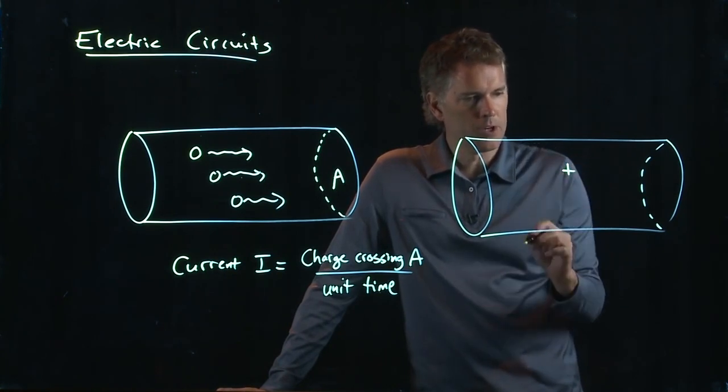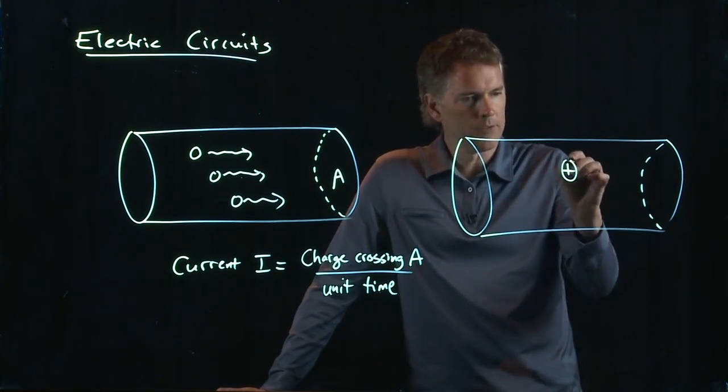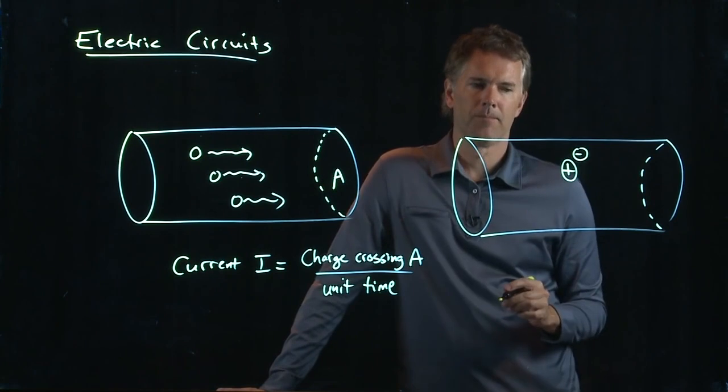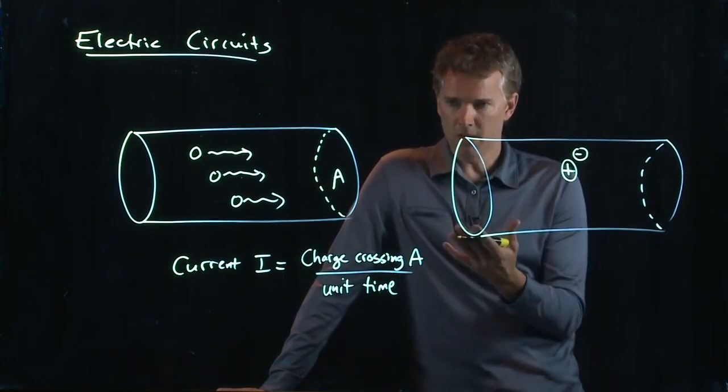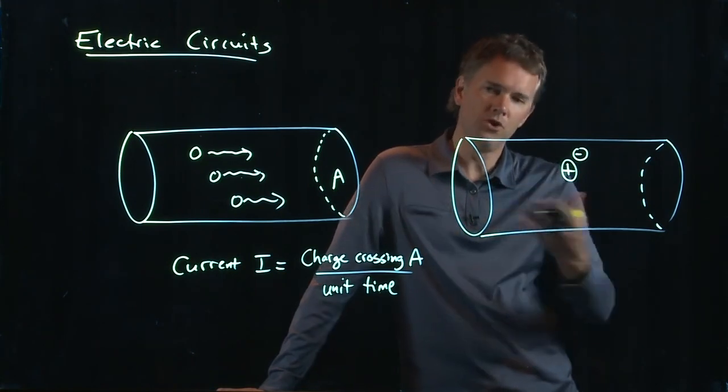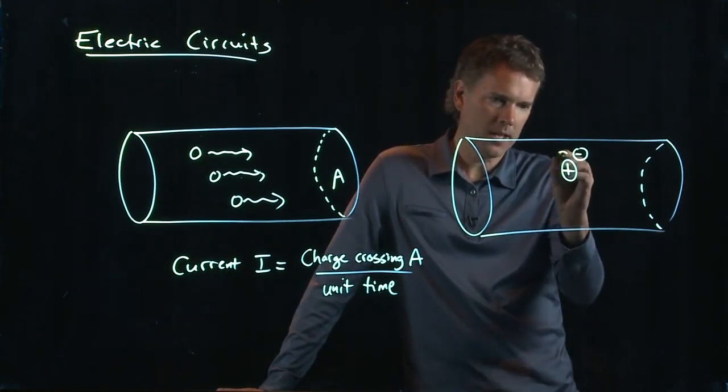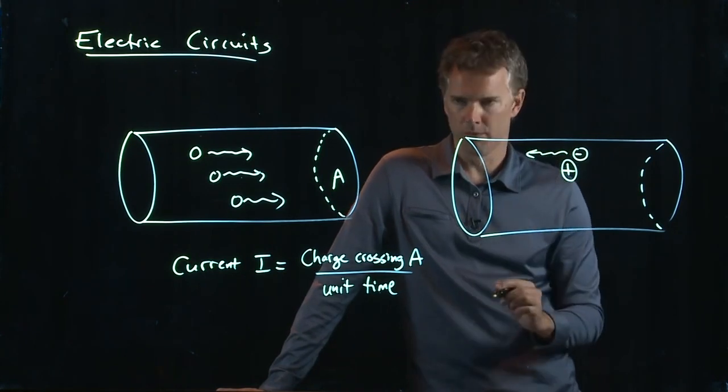And so there is some positive charge here and there is some negative charge right next to it. And when I apply a field to this thing to generate this current, it's actually the electrons that move.